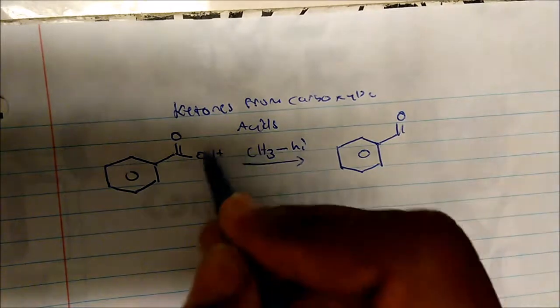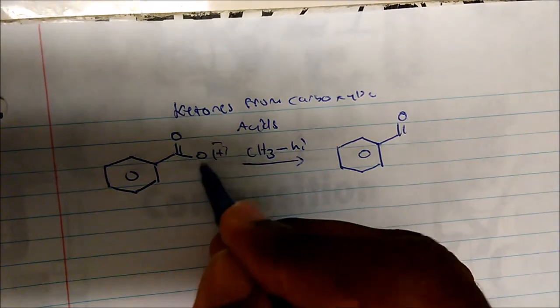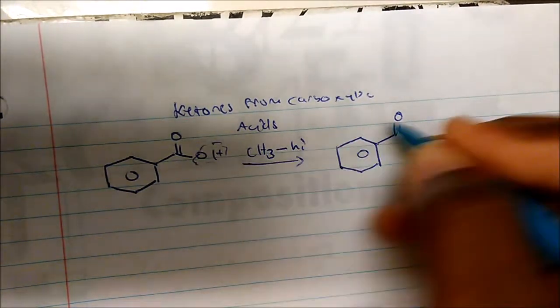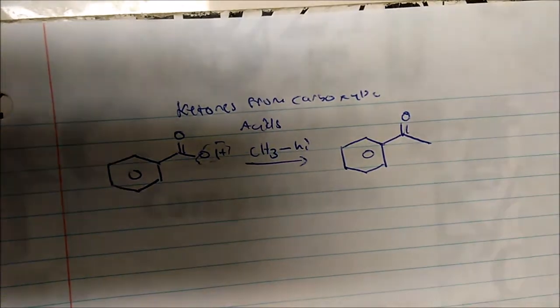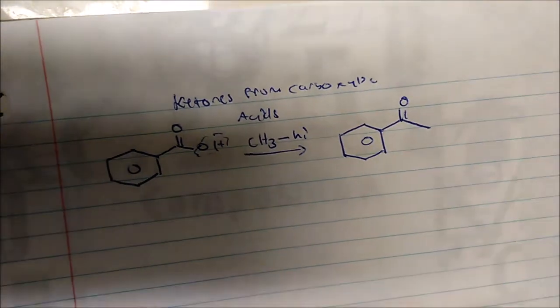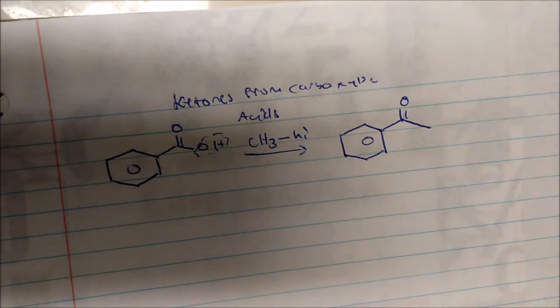So what I'll end up doing is that I'll lose my OH group, I'll lose the OH group and I'll form the bond with the CH3 and I get acetophenone. Now the idea is how does this happen? Well, let's go through the mechanism.